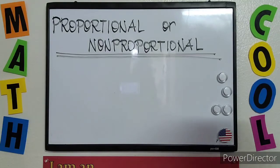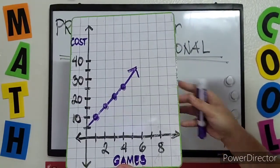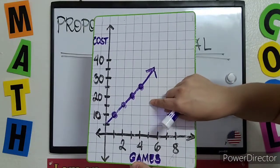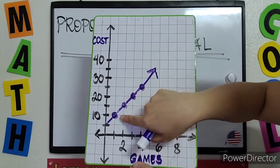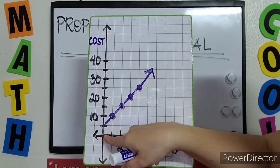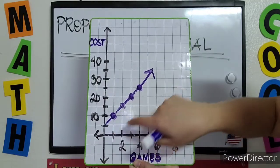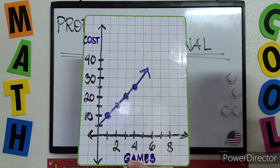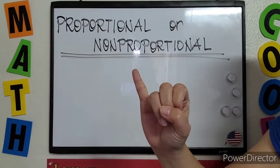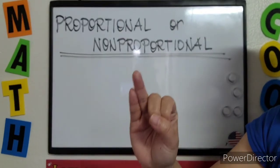Next, let's have example number 2. Look at the line — where did it start? This graph is non-proportional. Why? It is a straight line, correct, but it did not start at the origin. The origin is (0, 0). It started at this point, which is 5. It did not start at 0, so this one is non-proportional. So that is how easy it is to tell if a graph is proportional or not: first, it should be a straight line, and second, it should pass through the origin, or (0, 0).